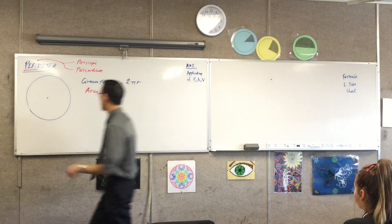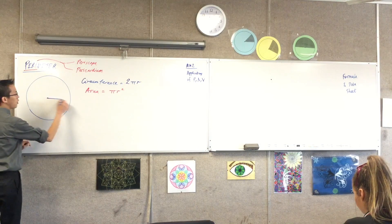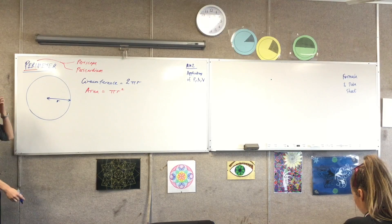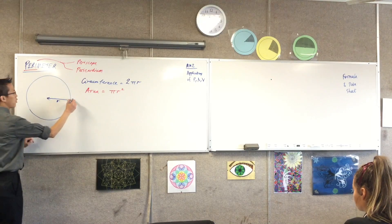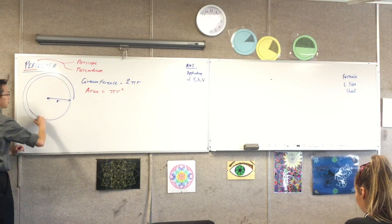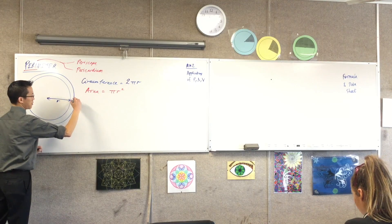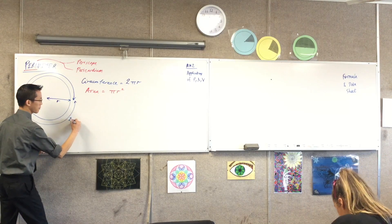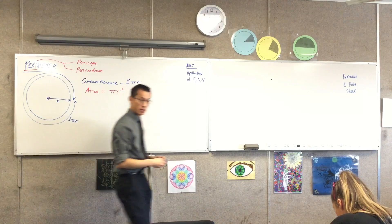So on our diagram here, right, let's put on the radius, okay, which therefore means if I go all the way around, that's 2πr, that's my circumference, yeah?